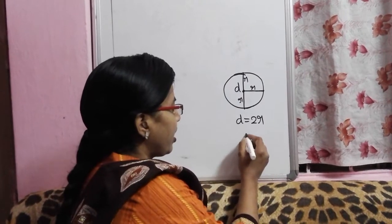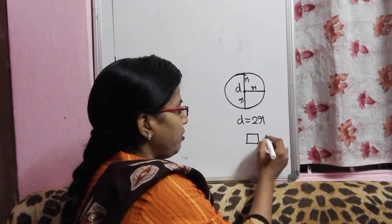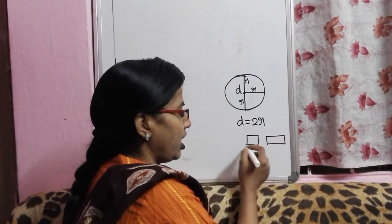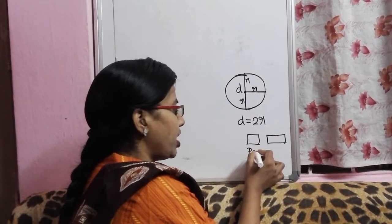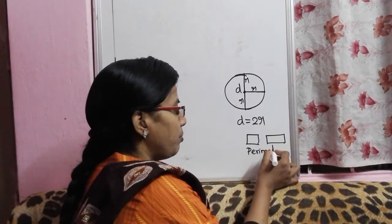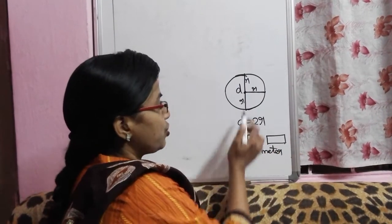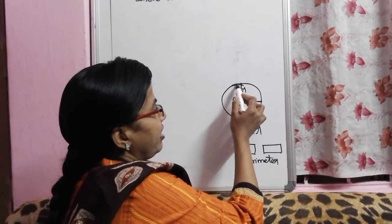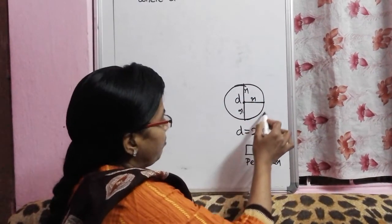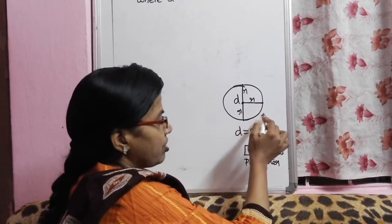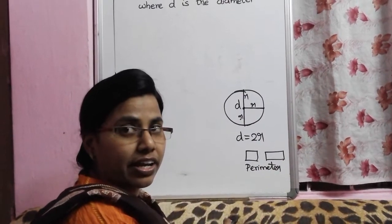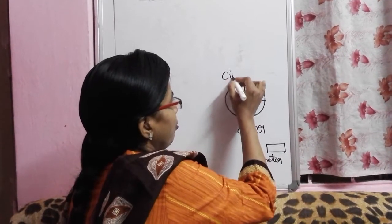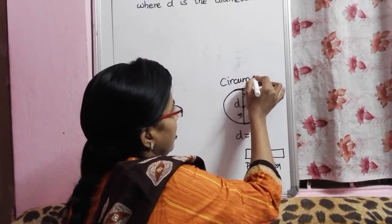For a square and rectangle, when we measure the boundaries — the length around the shapes — that is called the perimeter. Whereas when it comes to a circle, when you take a thread and measure the boundary or the border of the circle, that is called the circumference.